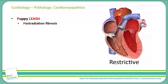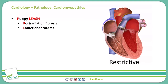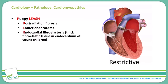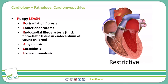The L we already mentioned is Loffler's endocarditis. The E in LEASH is endocardial fibroelastosis — a thick fibroelastic tissue of the endocardium seen in young children. Amyloidosis can cause a restrictive cardiomyopathy, alongside sarcoidosis, and hemochromatosis can cause a restrictive cardiomyopathy due to the deposition of iron into the muscle fibers.